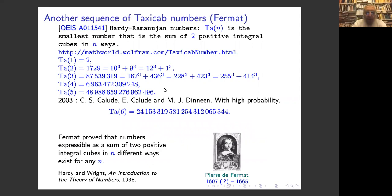There is another sequence going back to Fermat: you look at the smallest number that is the sum of two positive integral cubes in n ways — TA(n). So TA(1) = 2, TA(2) = 1729, and then TA(3) is the number expressible as a sum of two cubes in three different ways. We know one number which is the sum of two cubes in six ways; we don't know whether it is the smallest one, but it is very likely. This sequence is known to be infinite — the proof is in Hardy and Wright and goes back to Fermat.